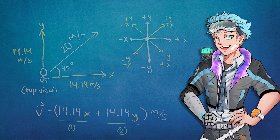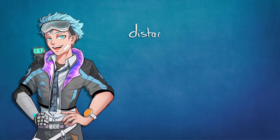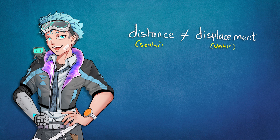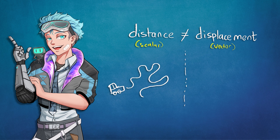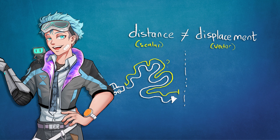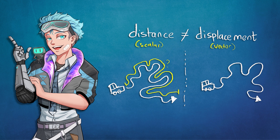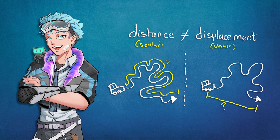If you've been paying attention, you'd notice that I said distance was a scalar and displacement was a vector. Aren't they the same thing? Evidently not. Distance, used in speed, is a measure of how much ground you've covered in a certain time period — it pays little respect to where you began or where you ended up. Displacement, used in velocity, is the difference in position between where you began and where you ended up. It doesn't care how much ground you've covered — only how far you ended up from where you started and in which direction.